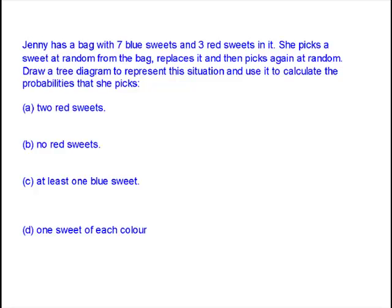Hi. You may remember this from a previous video on tree diagrams and probability. It's a question about sweets in a bag. Jenny has seven blue sweets and three red sweets. She picks a sweet at random from the bag, replaces it, and picks again at random. You were asked to draw a tree diagram representing this situation and use it to calculate the probabilities for these four different ways she might pick.